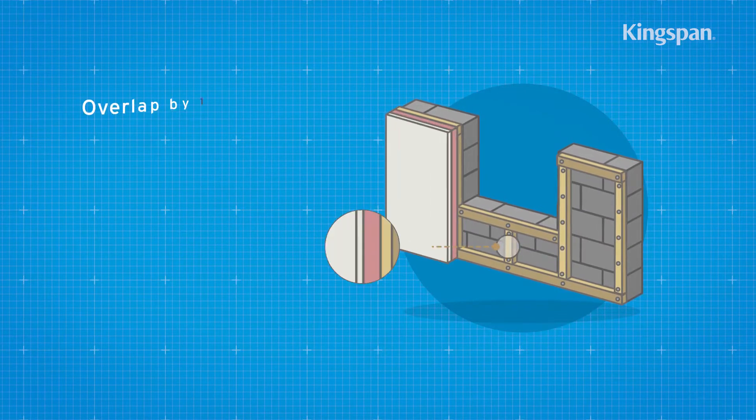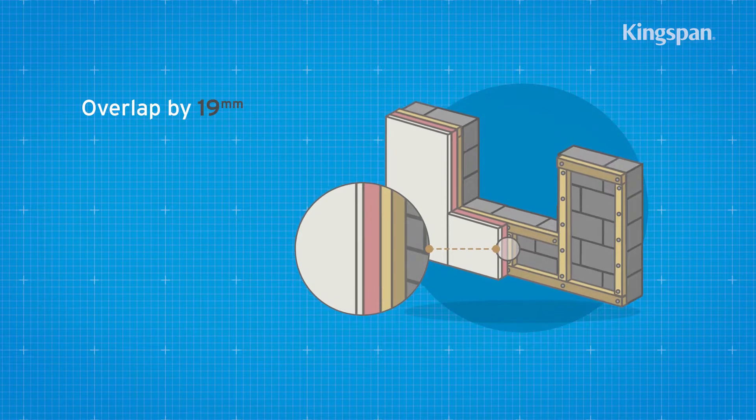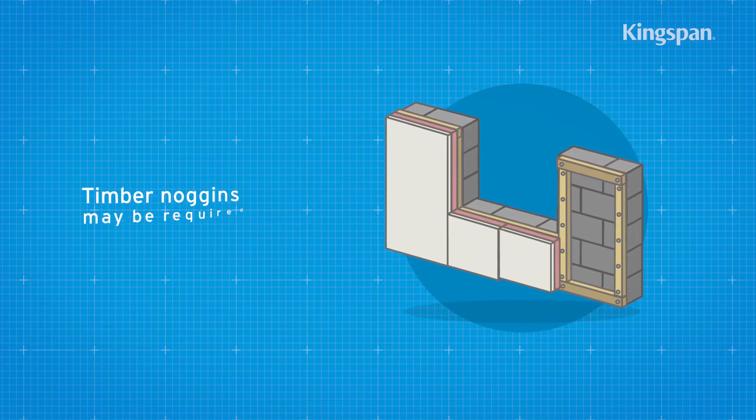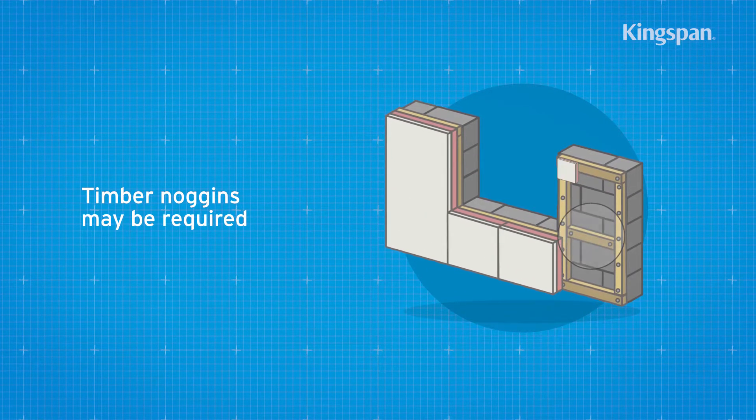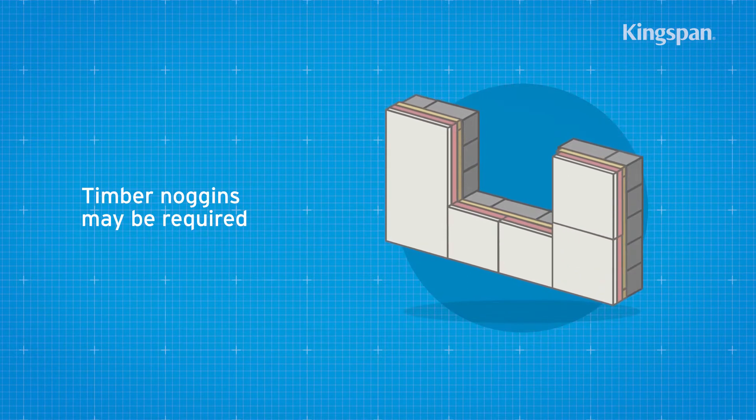Insulated plasterboard sheets should always lap timber battens at the sheet joints. Note that timber noggins may be required where sheets of insulated plasterboard are unsupported.